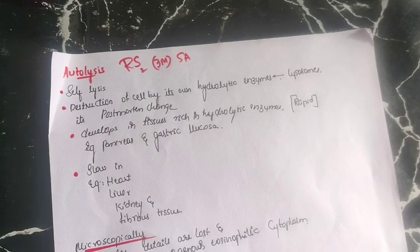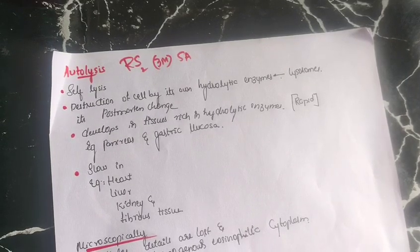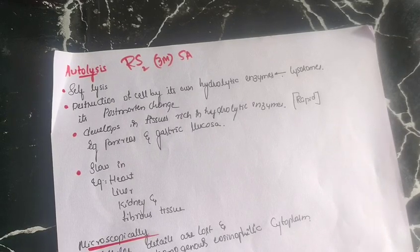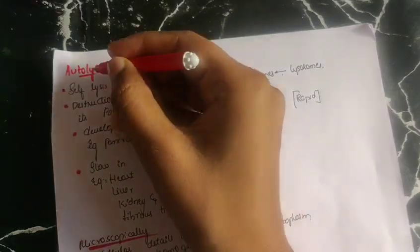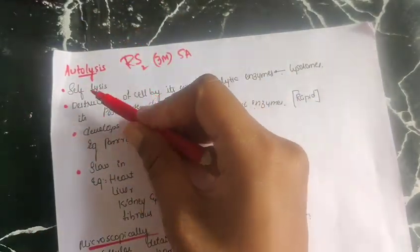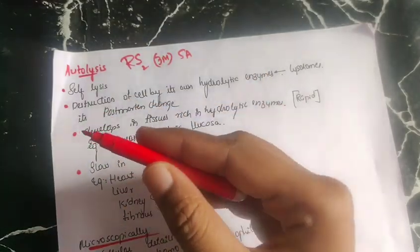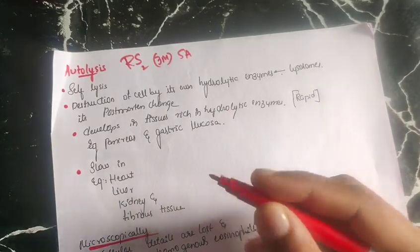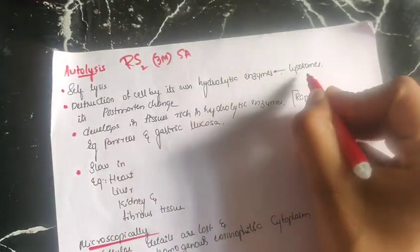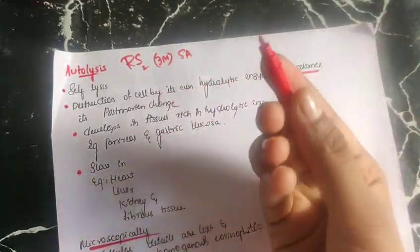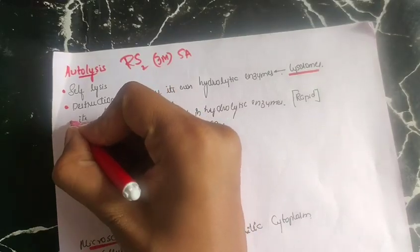This is Preeti from Hassan Institute of Medical Science. In this video, we will be learning about autolysis, which has been asked in previous years as a short answer question. 'Auto' means self and 'lysis' means breakdown, so autolysis means self-destruction — the destruction of a cell by its own hydrolytic enzymes, which are present in a cell organelle known as lysosomes. Lysosomes are also known as the 'suicide bags' of the cell, as they contain hydrolytic enzymes that can destroy the cell itself.